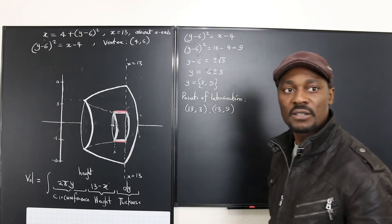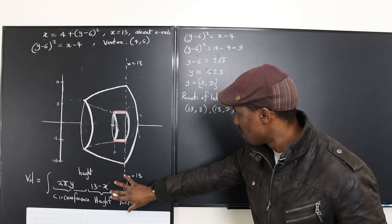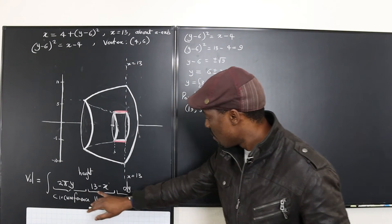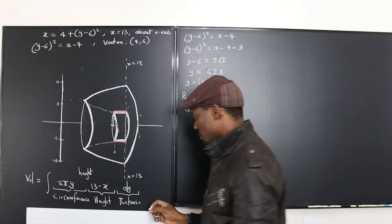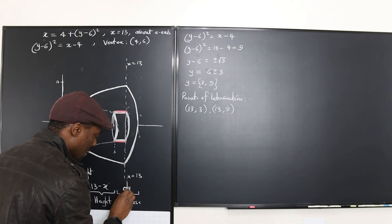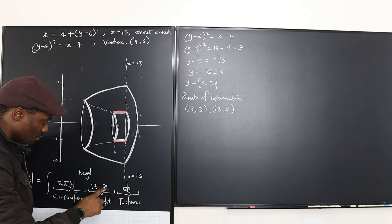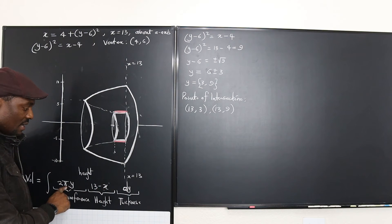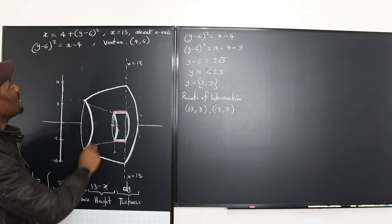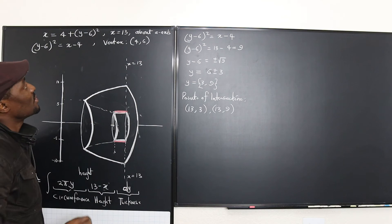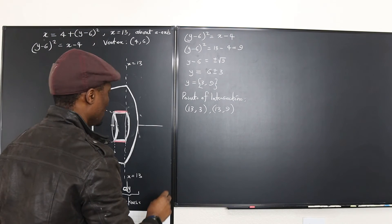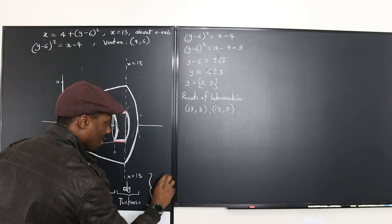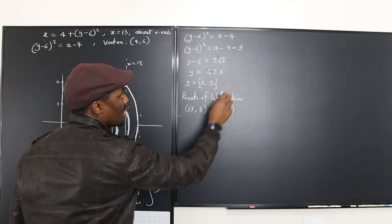So now you just need to integrate. Because we're integrating with respect to y, it's dy. We're going to need to change x to be expressed in terms of y. This expression for the volume is going to be equal to the integral — now that we have decided it's dy, our bounds will have to be the y bounds.